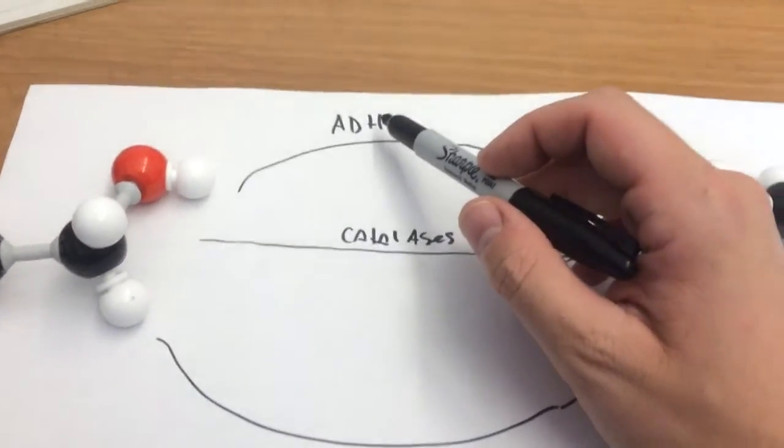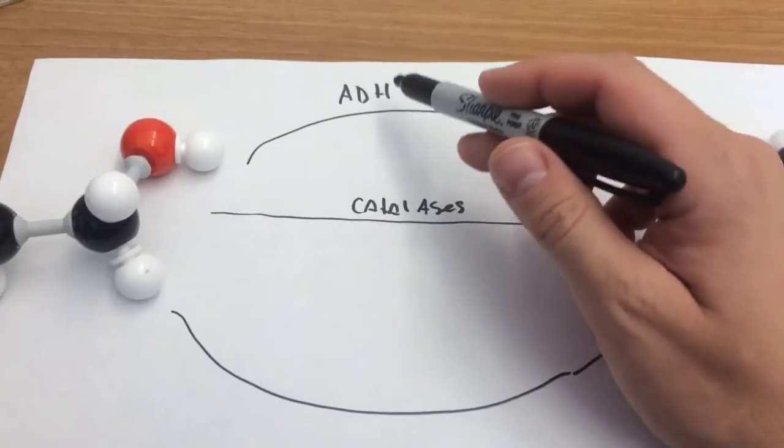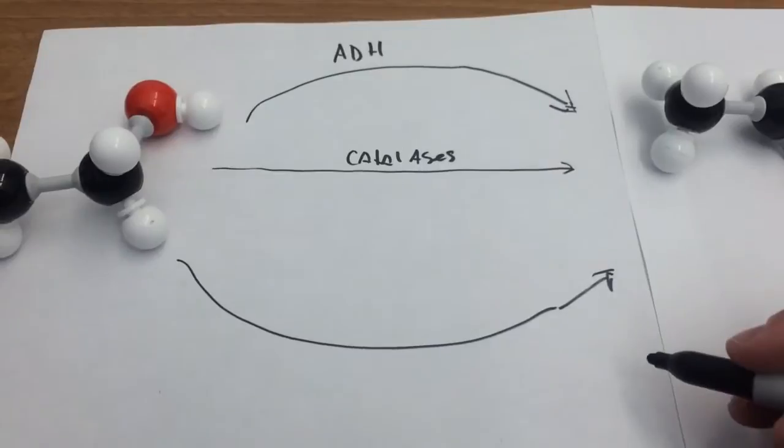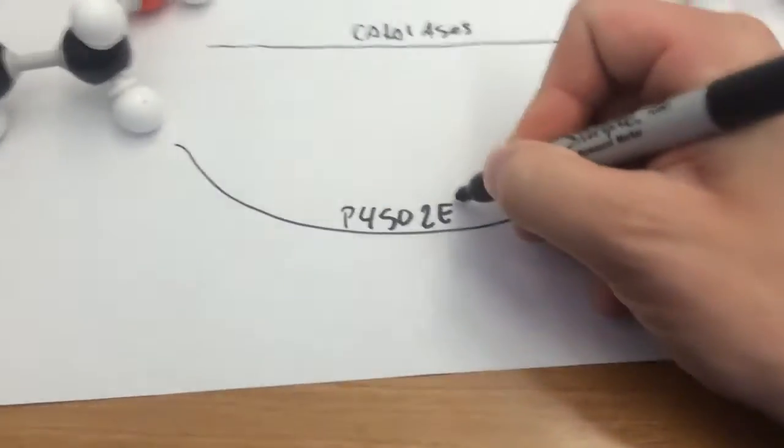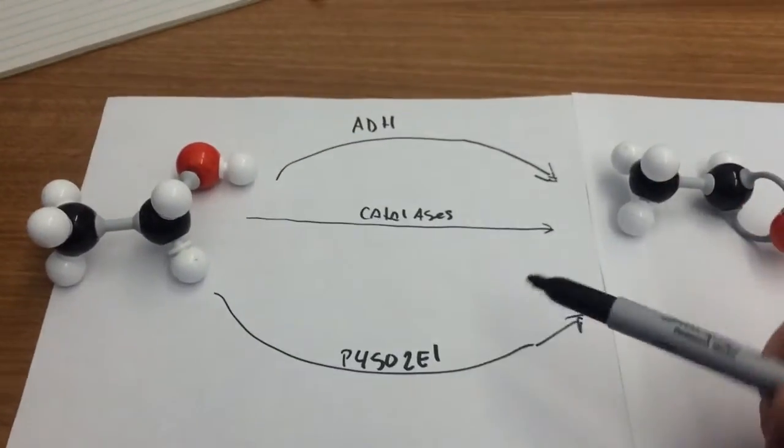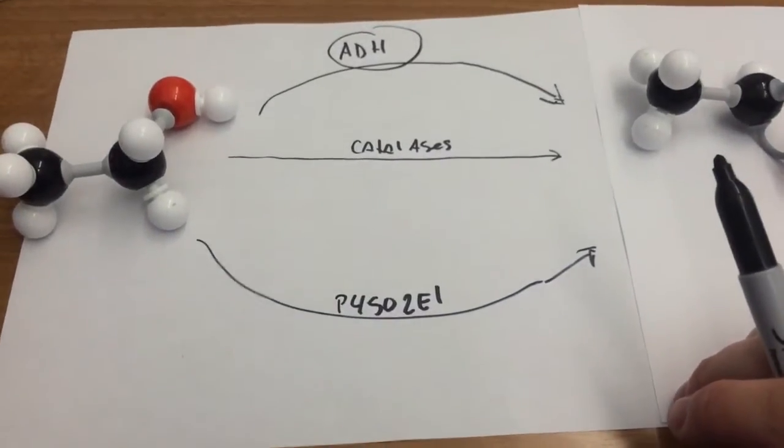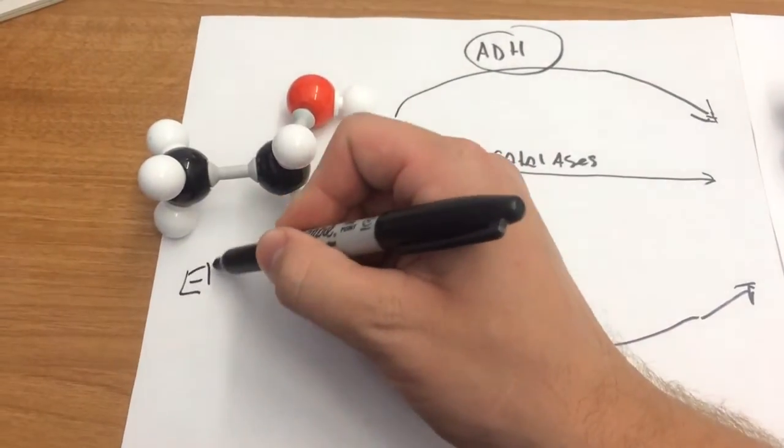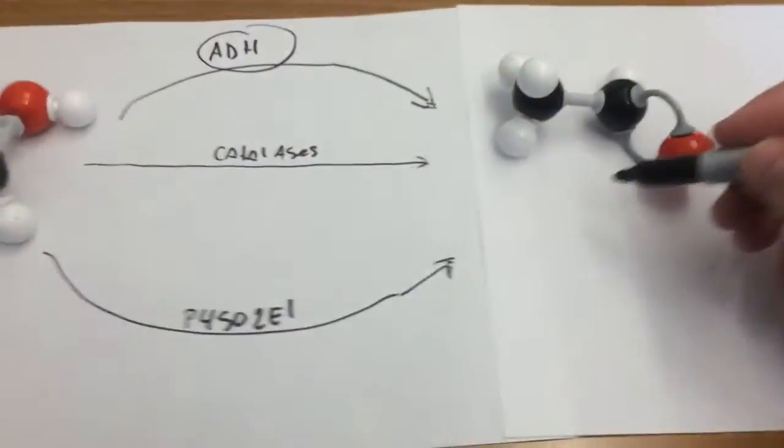And then you also have a set of CYP450 enzymes. Alcohol dehydrogenase, as I talked about in other videos, is not a cytochrome P450 enzyme. It is not an iron-containing enzyme. And I've done some other videos on that. And then there is the CYP452E1, I believe. Yeah, I'm pretty sure.